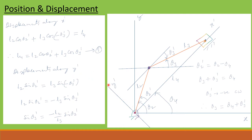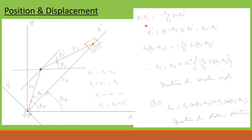Similarly, displacement along y prime axis can be written as L2 sin theta 2 prime equal to L3 sin(minus theta 3 prime). Since sin(minus theta 3 prime) becomes minus sin theta 3 prime, this equation becomes L2 sin theta 2 prime equal to minus L3 sin theta 3 prime. Therefore, sin theta 3 prime equal to minus L2 divided by L3 times sin theta 2 prime.